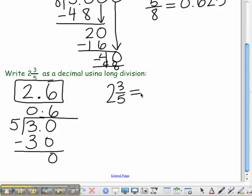So, 2 times 5 is 10 plus 3 is 13 over 5. And, you can divide 13 by 5.